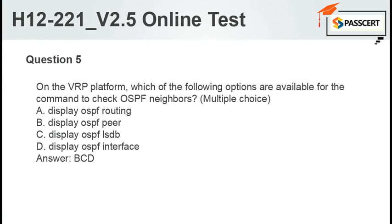Question 5: On the VRP platform, which of the following options are available for the command to check OSPF neighbors? Multiple choice. A. Display OSPF routing. B. Display OSPF peer. C. Display OSPF LSDB. D. Display OSPF interface. Answer: B, C, D.